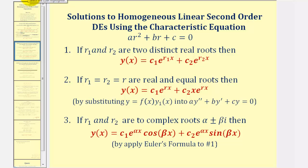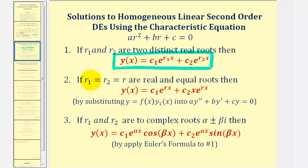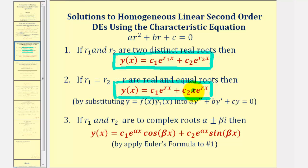In our first lesson, we discussed when we had two distinct real roots, this would be the form of the general solution. And in this video, we're going to discuss how if r₁ equals r₂, or we have two real and equal roots, the general solution will be in this form. Notice in this form, we have an extra factor of x.